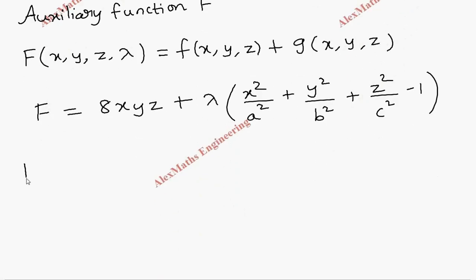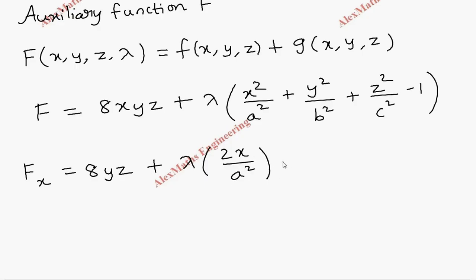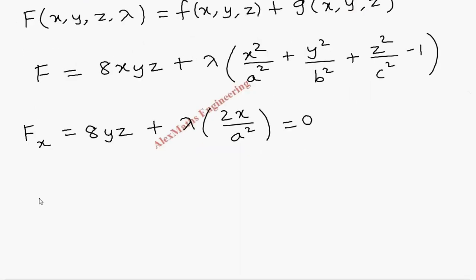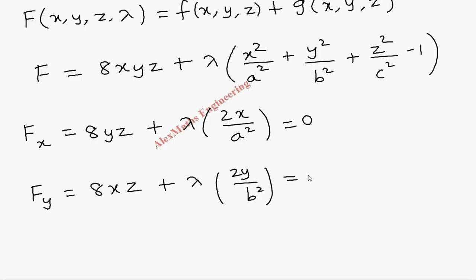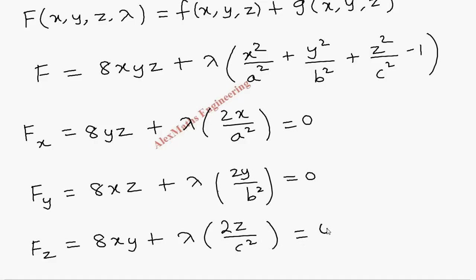As per the procedure we find the partial differentiation of F with respect to x: 8yz + λ·(2x/a²) = 0. In the same way we find Fy: 8xz + λ·(2y/b²) = 0. Then we find Fz: 8xy + λ·(2z/c²) = 0. Now we have three equations.